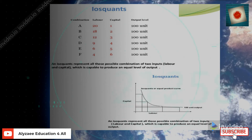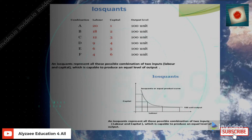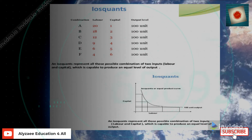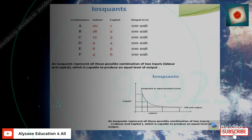In the table, for combination A, we use 20 labor per hour with 1000 rupees of capital, giving an output level of 100 units per hour. For combination E, we use 18 labor per hour with 2000 rupees capital, also giving 100 units per hour. For another combination, we use 12 labor per hour with 3000 rupees capital.